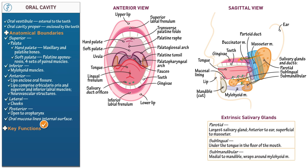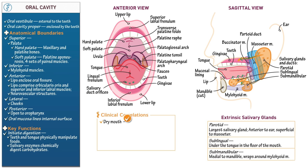Finally, denote the key functions of the oral cavity. It initiates chemical and mechanical (physical) digestion. The teeth and tongue physically manipulate the food, while salivary enzymes chemically digest carbohydrates. Consider the clinical consequences of dry mouth — too little saliva. Decreased lubrication can impair tasting, chewing, swallowing, and speaking. Decreased salivary bacteria-fighting enzymes increase the chances of dental decay and oral infections.